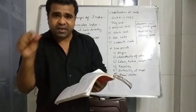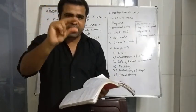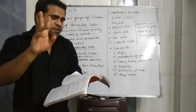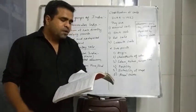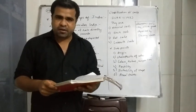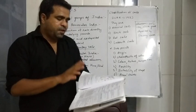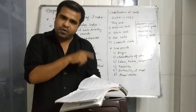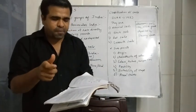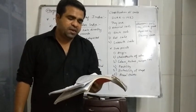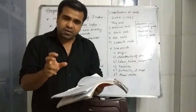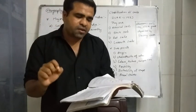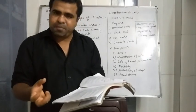The color and texture of alluvial soil varies from light to dark depending on whether it is new or old alluvium. The soil is rich in potash and humus but deficient in phosphorus and nitrogen — these two deficiencies are important to note.